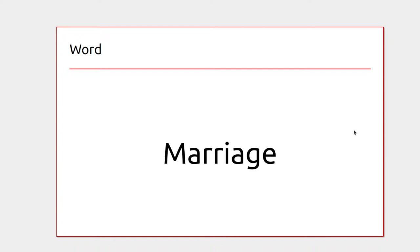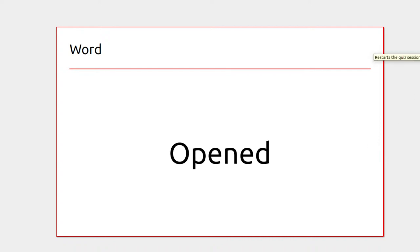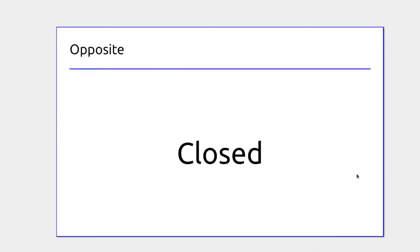Marriage is where a couple joins together and looks to spend the rest of their life together. The opposite is divorce, where a couple separates. For something that's opened, the opposite is closed — you can open a jar of spices and then close it once you're done.